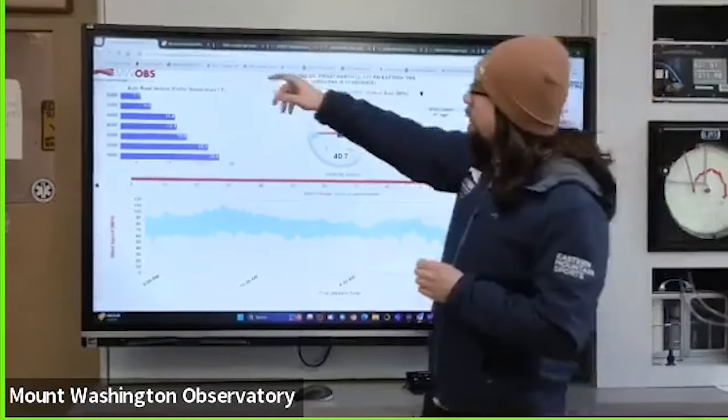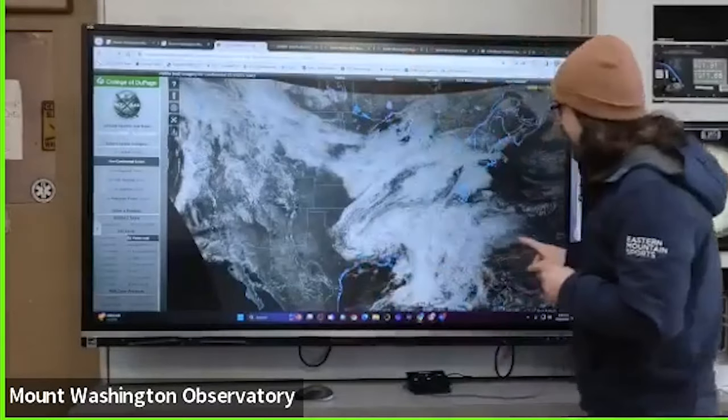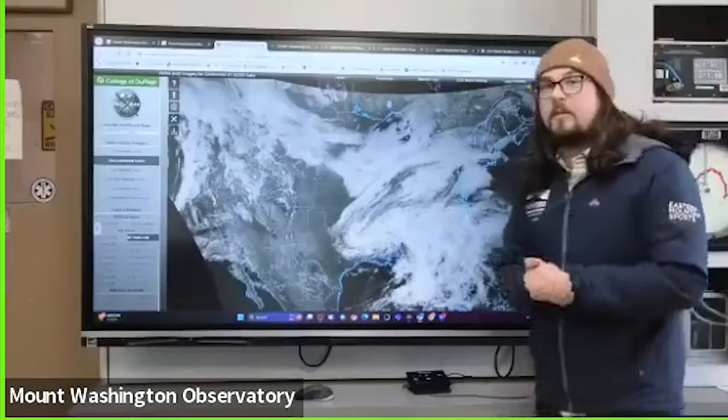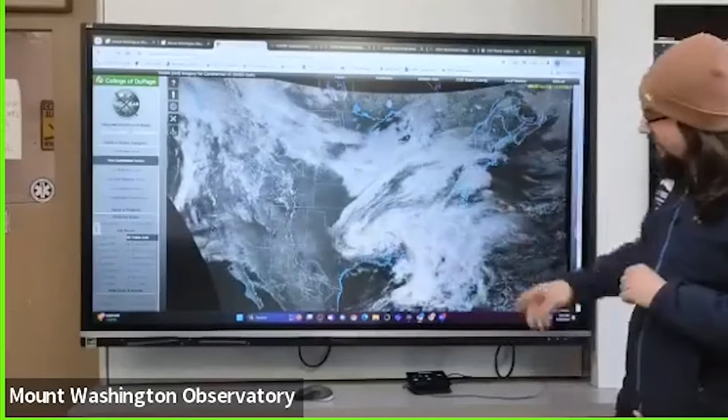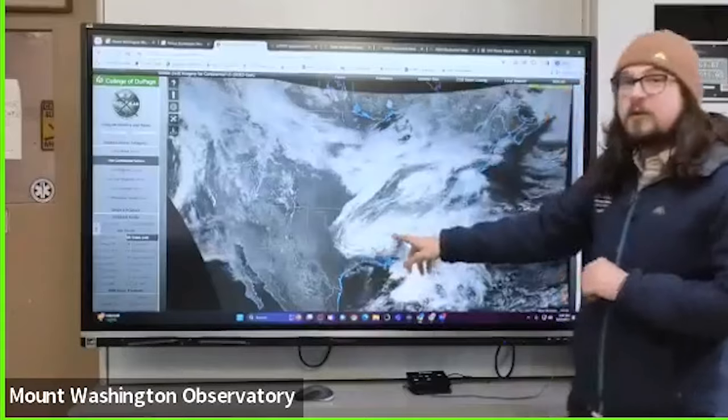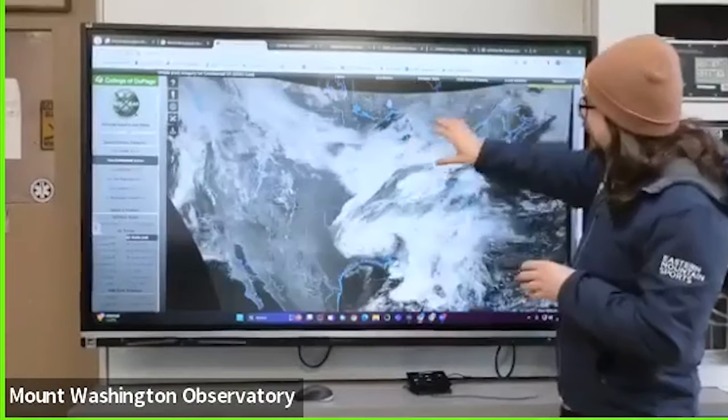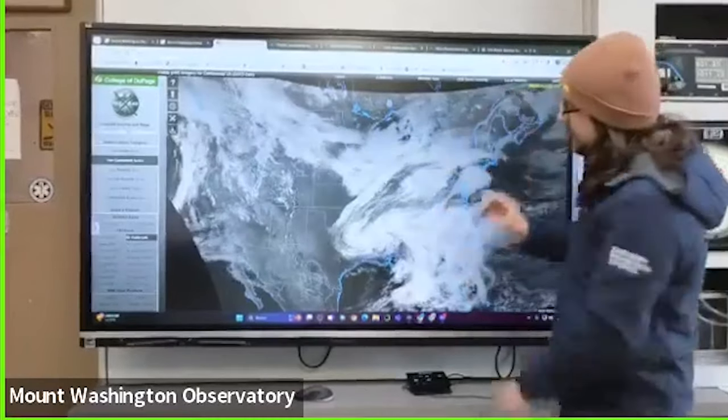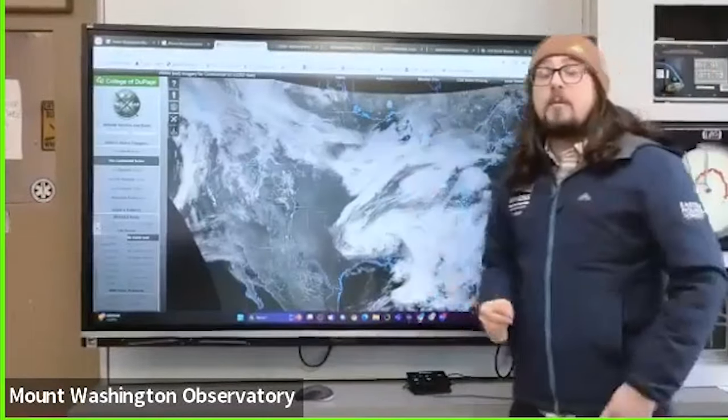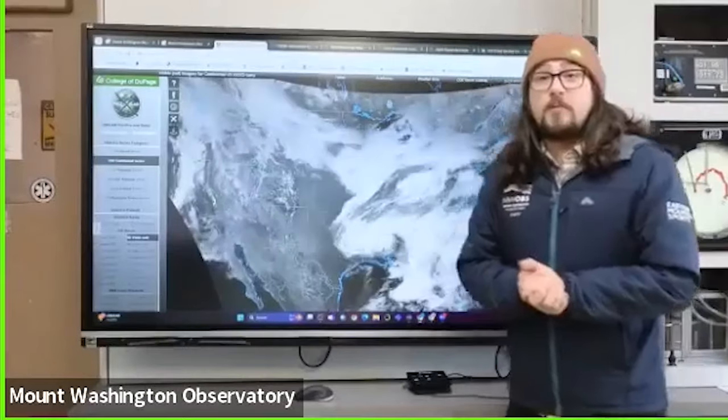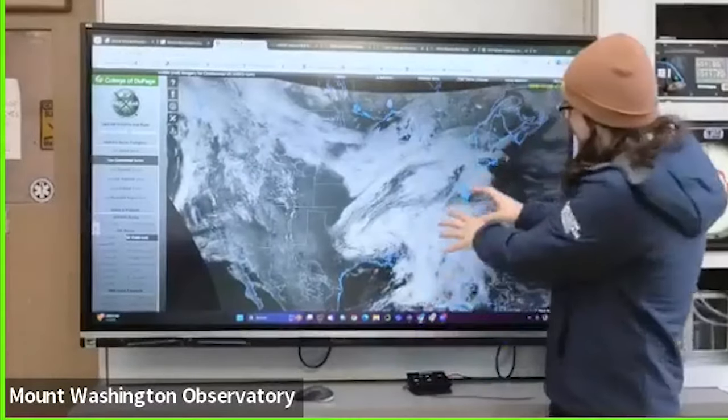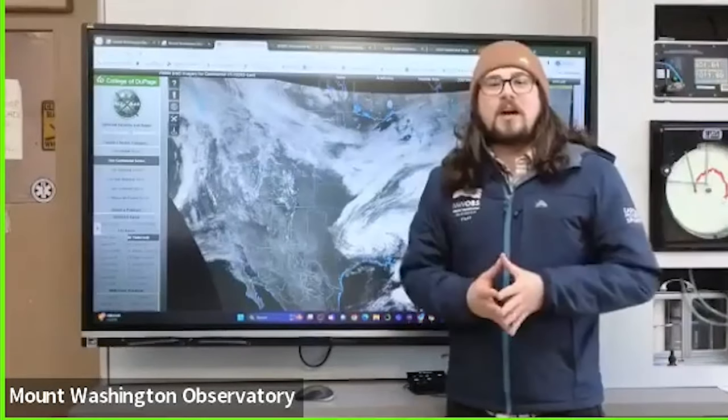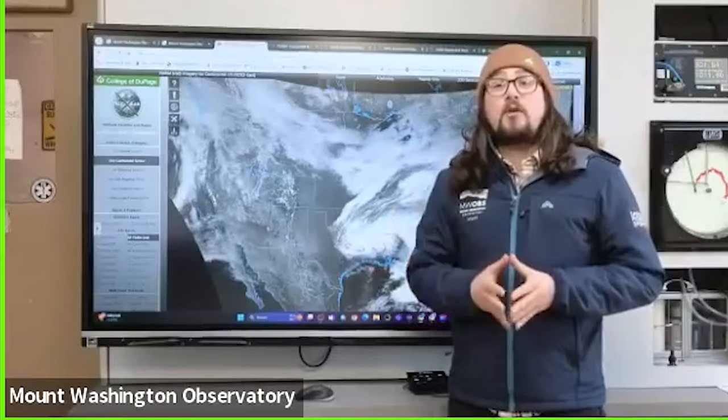Currently sitting just below tropical storm force at 39 miles per hour, but they were much stronger this time yesterday. They got all the way up to about 117 miles per hour last night. Visibility today has increased from about an eighth of a mile to about 130 miles, our maximum visibility from the summit. We'll take a look across the valley from our wildcat cam.